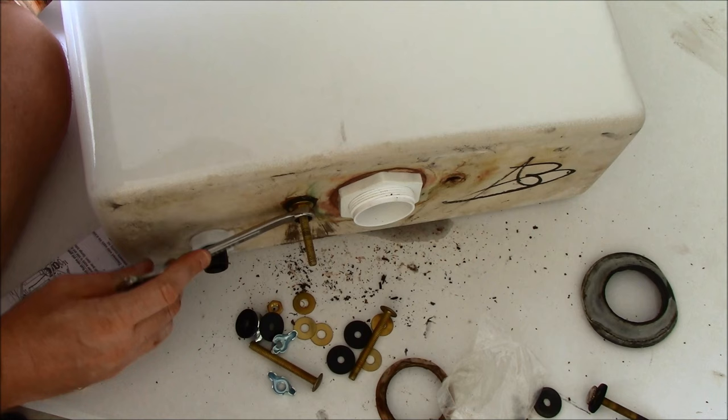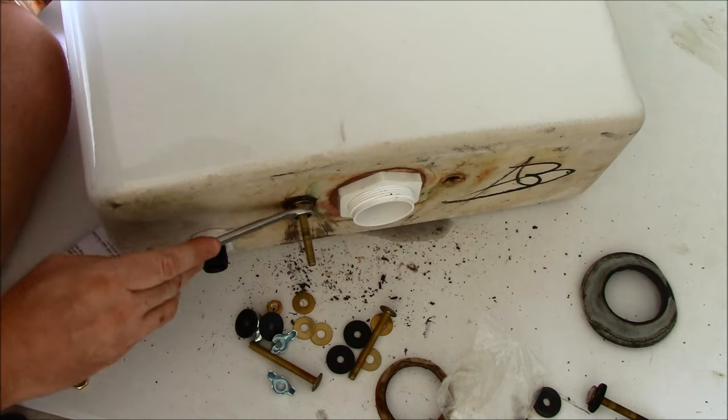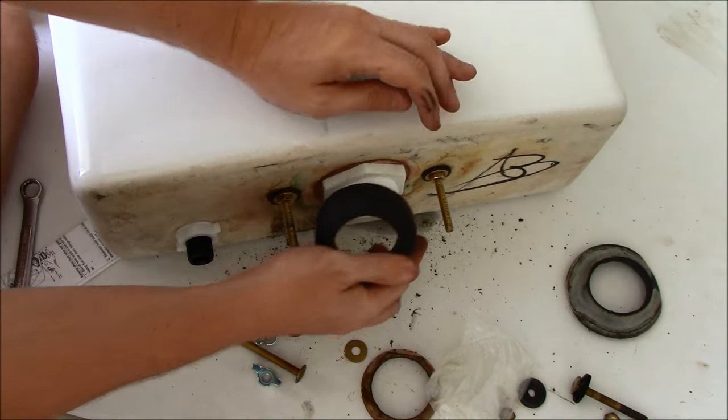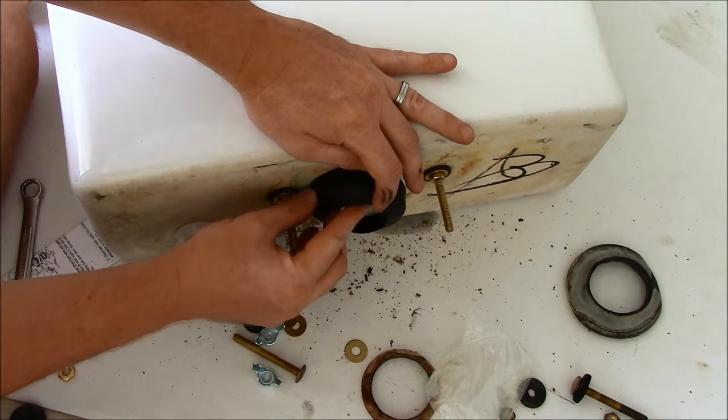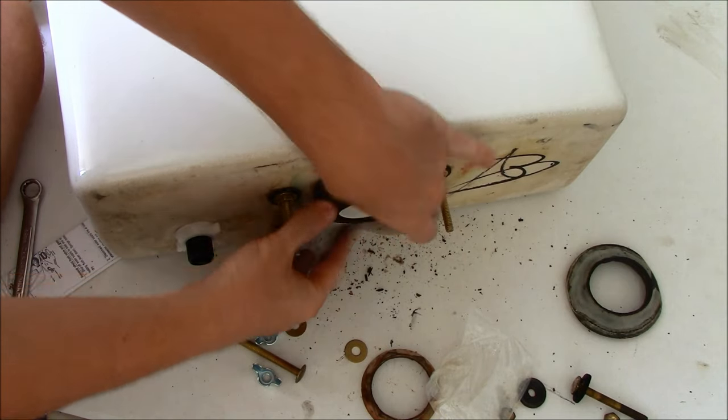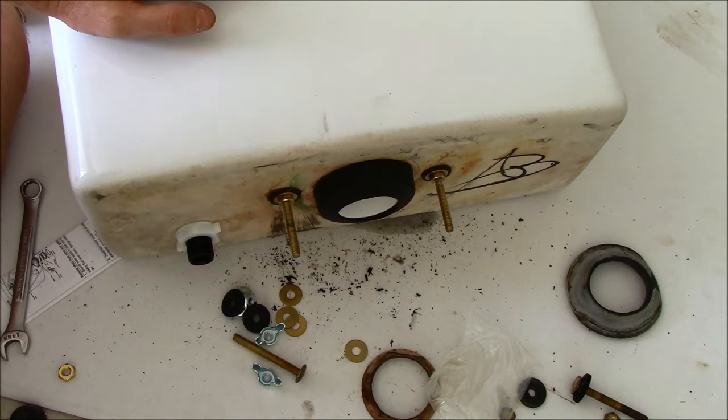These don't need to be super tight as well. We just want to snug them up. Place the flange gasket on, and we are ready to put this back on the toilet.